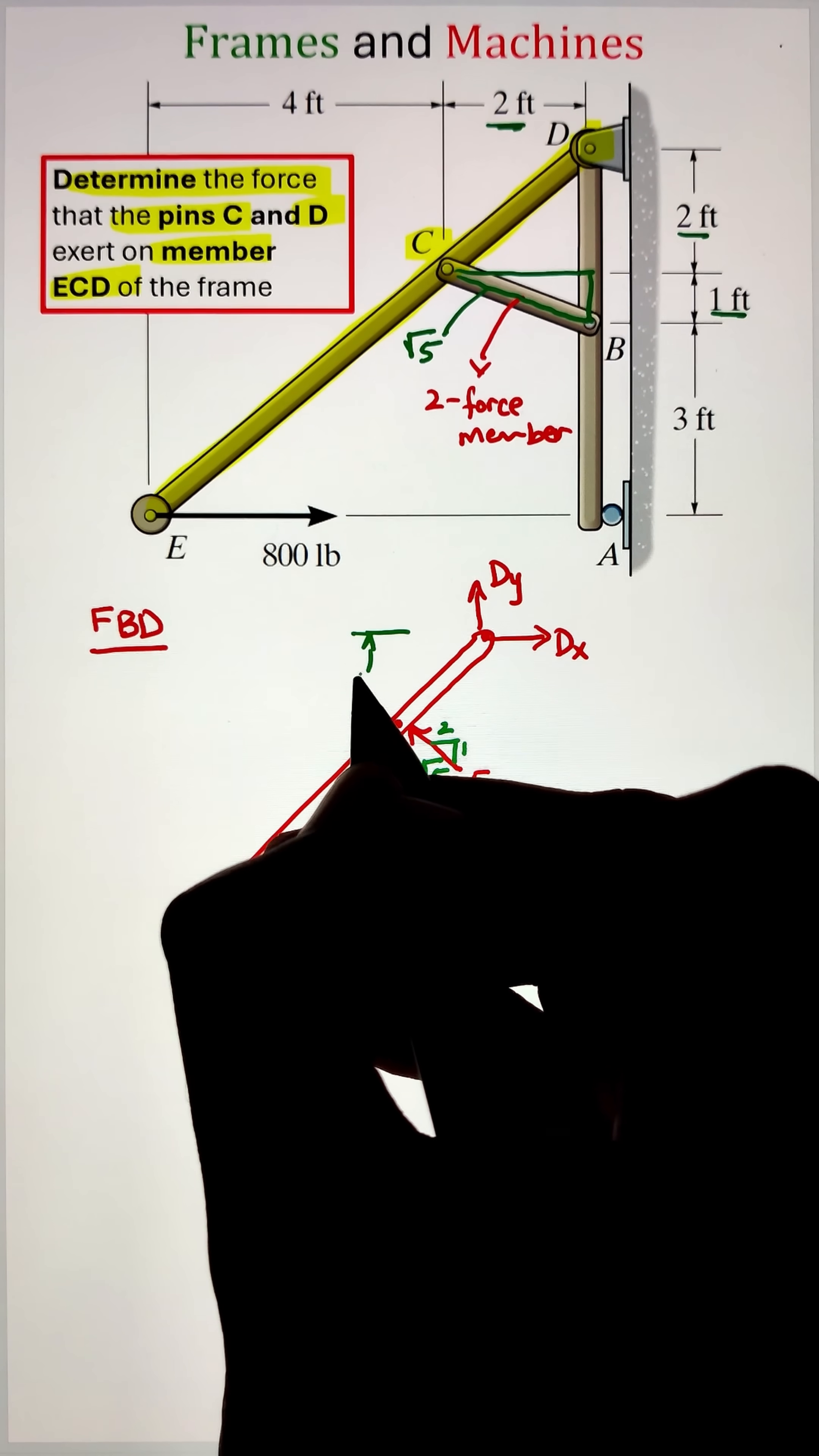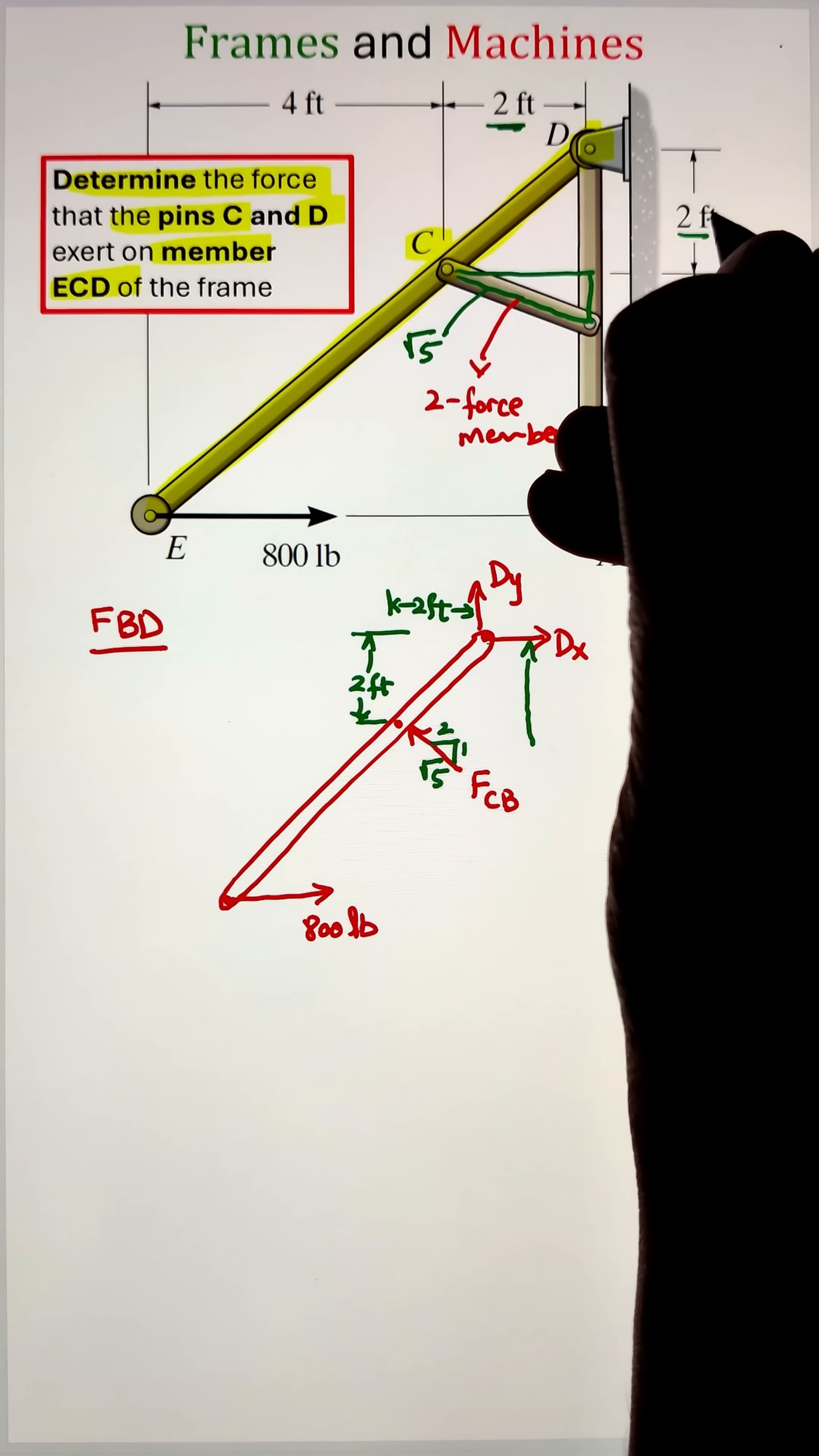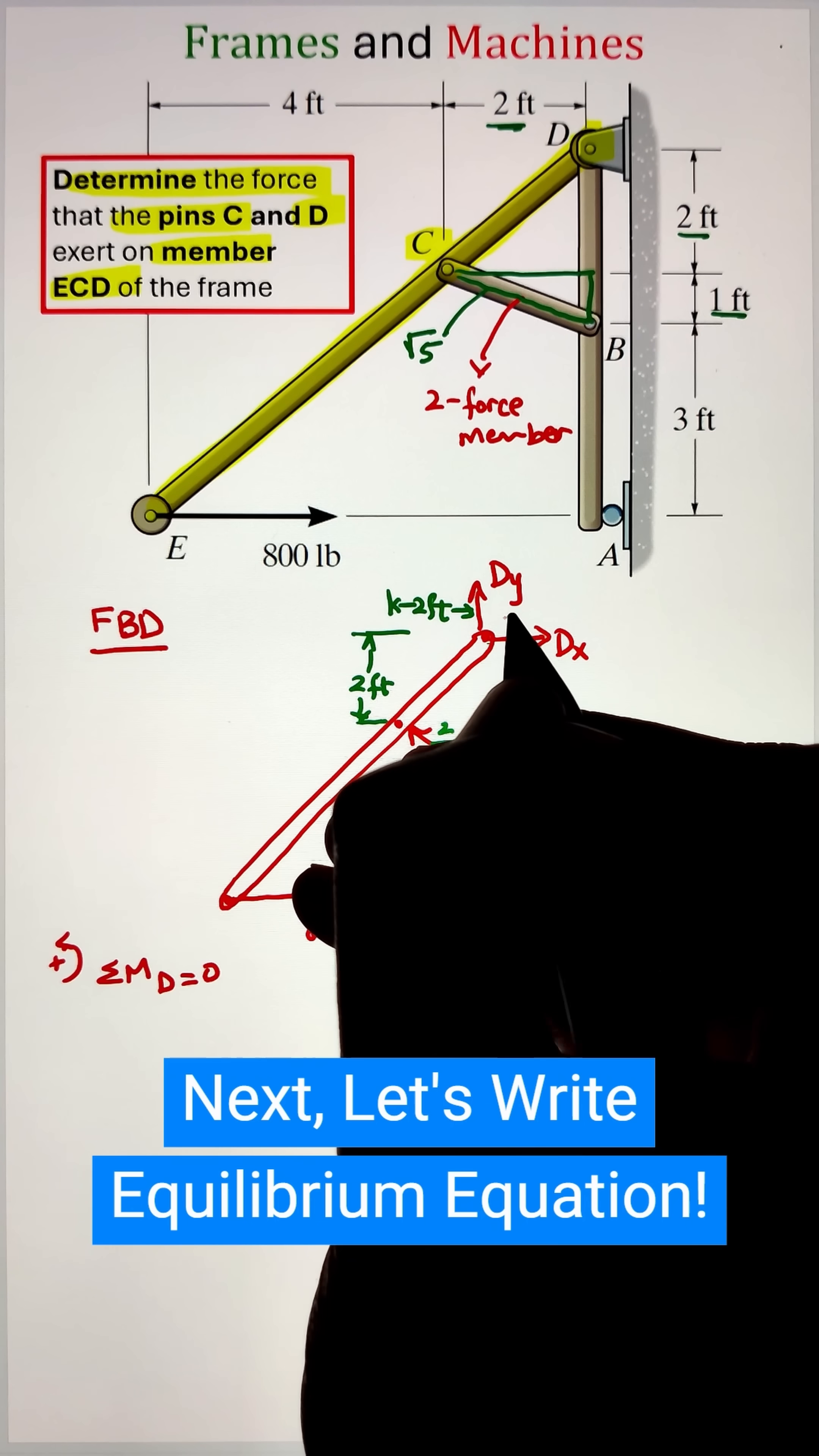Next, we can identify the position of point C with respect to D and list down its distance from point D of two feet in the vertical and two feet in the horizontal direction. Once we have listed all the external loads and support reactions and the dimensions, we can go ahead and start applying our equilibrium equations.